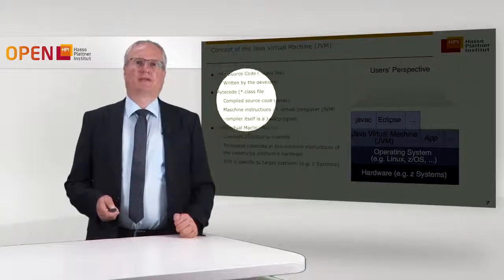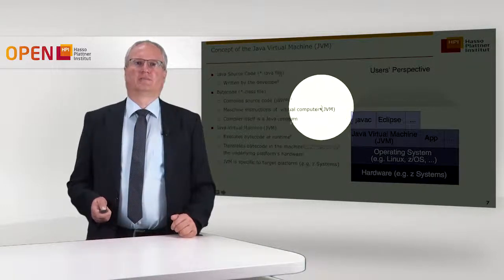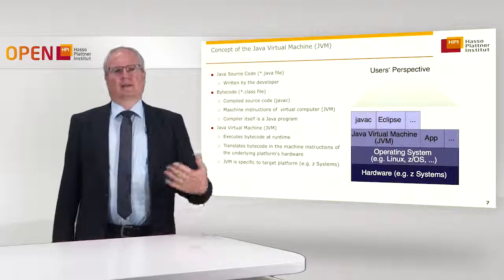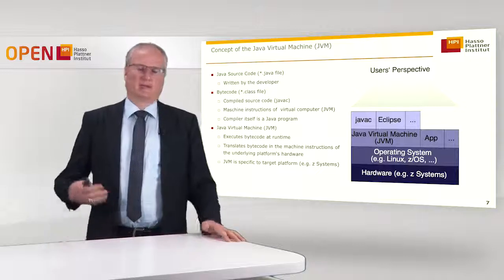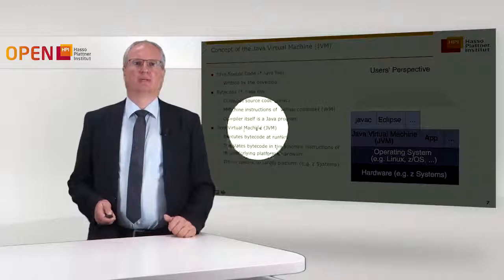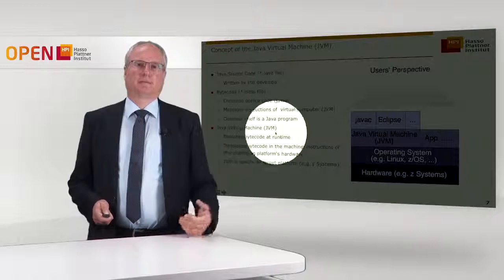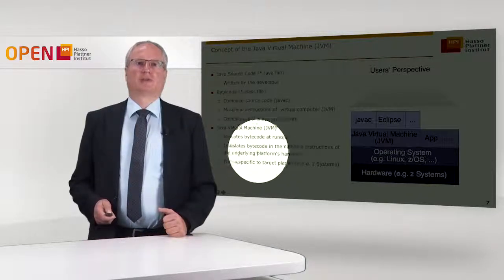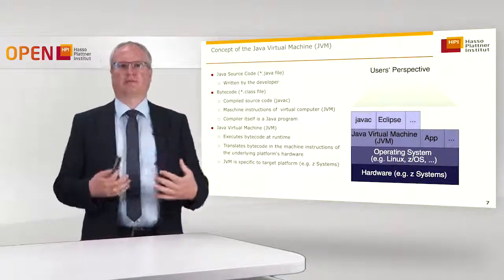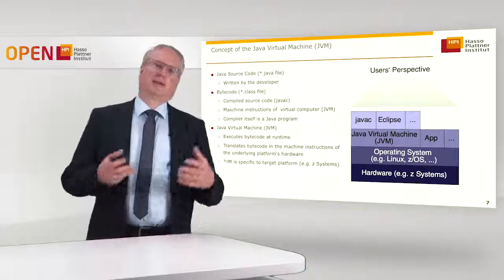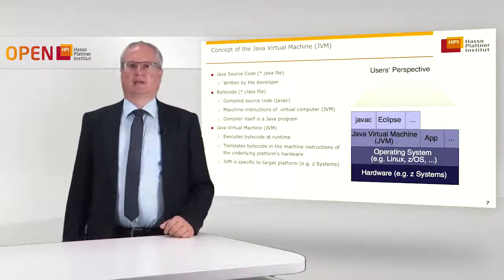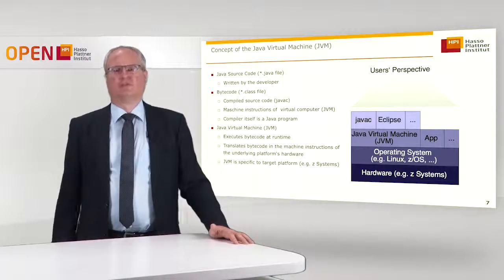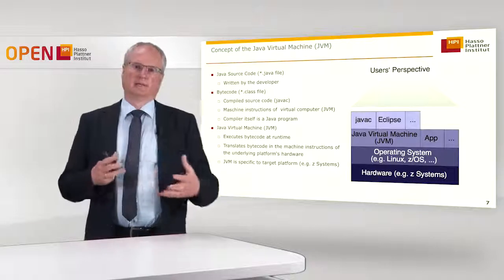The Java bytecode contains the machine instructions for the JVM, which can be thought of as a powerful, high-level virtual computer. The compiler itself is a Java program, so Java is self-hosting. The JVM is the runtime that takes the bytecode, converts it to the machine language of the target system, and executes it at runtime when you start the program. The performance of the JVM strongly depends on how this translation from bytecode to native machine language takes place. Different approaches exist — translating at runtime or before execution — and this shifts time to startup, which different JVM implementations have handled differently over time.